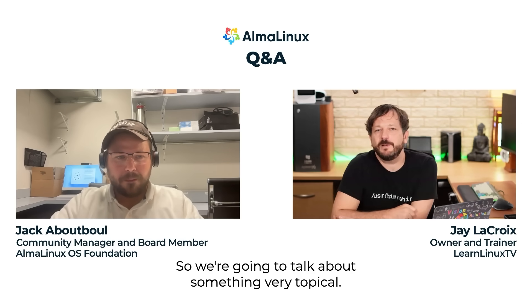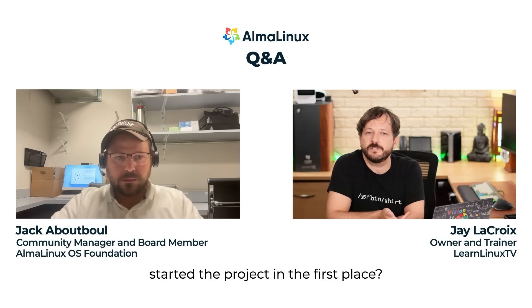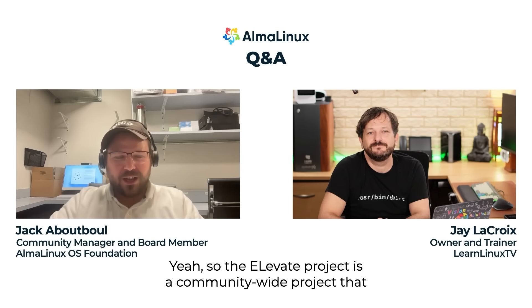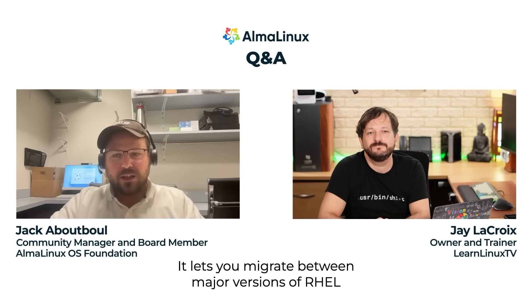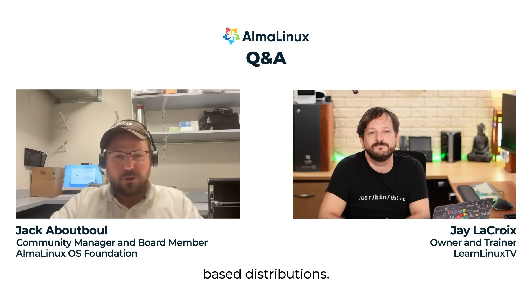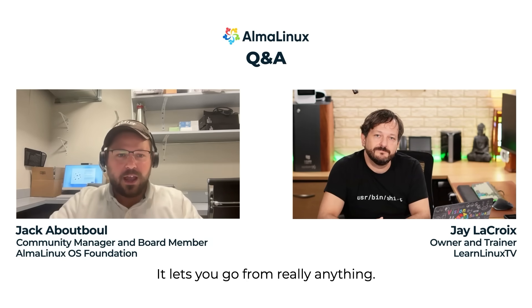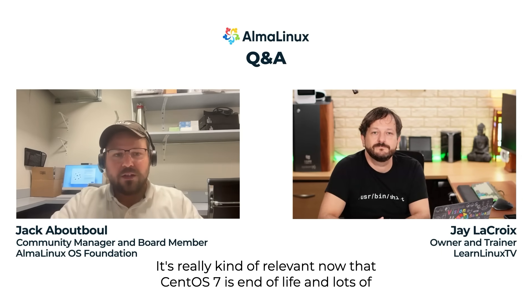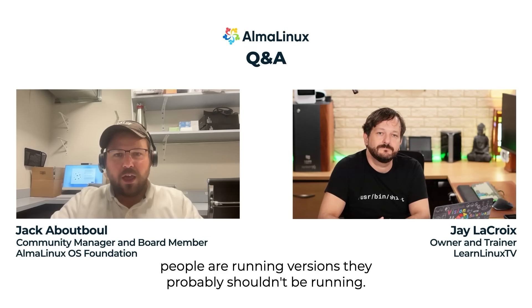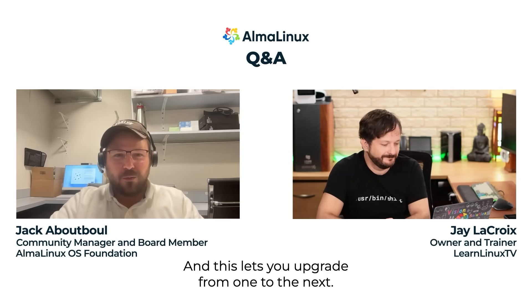Doing awesome. So we're going to talk about something very topical. Can you tell us a little bit about the Elevate project and why AlmaLinux started the project in the first place? So the Elevate project is a community-wide project that we started here at AlmaLinux. It lets you migrate between major versions of RHEL-based distributions — that's what the EL, capitalized, in Elevate stands for. It lets you go from really anything — CentOS 6, CentOS 7 — to a newer version. It's really relevant now that CentOS 7 is end-of-life and lots of people are running versions they probably shouldn't be running. This lets you upgrade from one to the next.